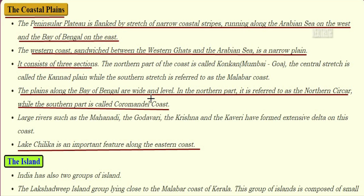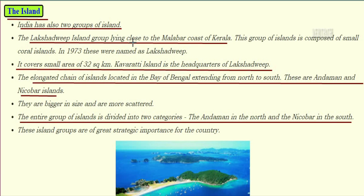The plains along the Bay of Bengal are very wide and level. In the northern part they are referred to as Northern Sirkars, and the southern part is known as the Coromandel Coast. Large rivers such as Mahanadi, Godavari, Krishna, and Kaveri have formed extensive deltas on this coast. Lake Chilika is an important feature along the eastern coast.